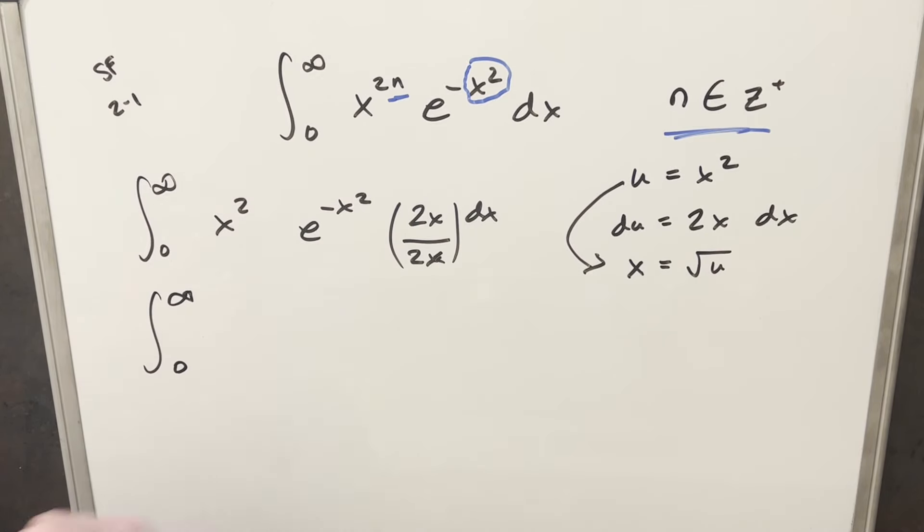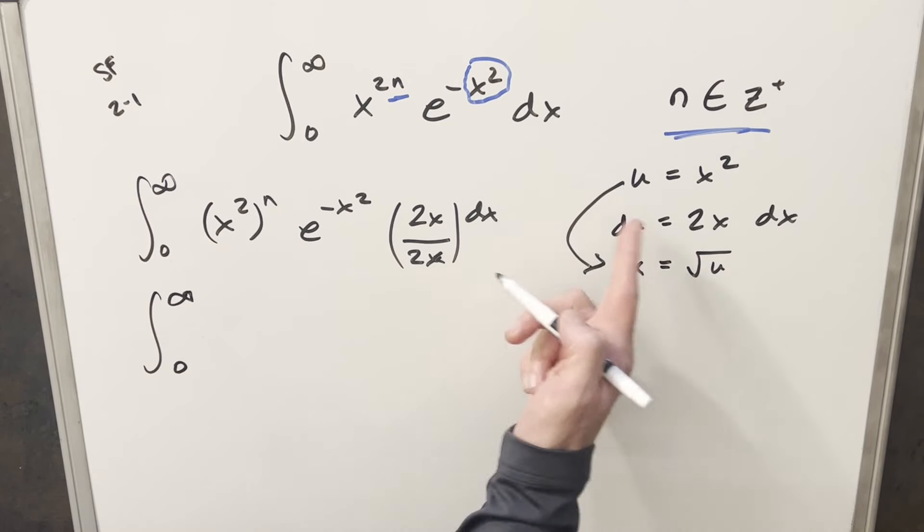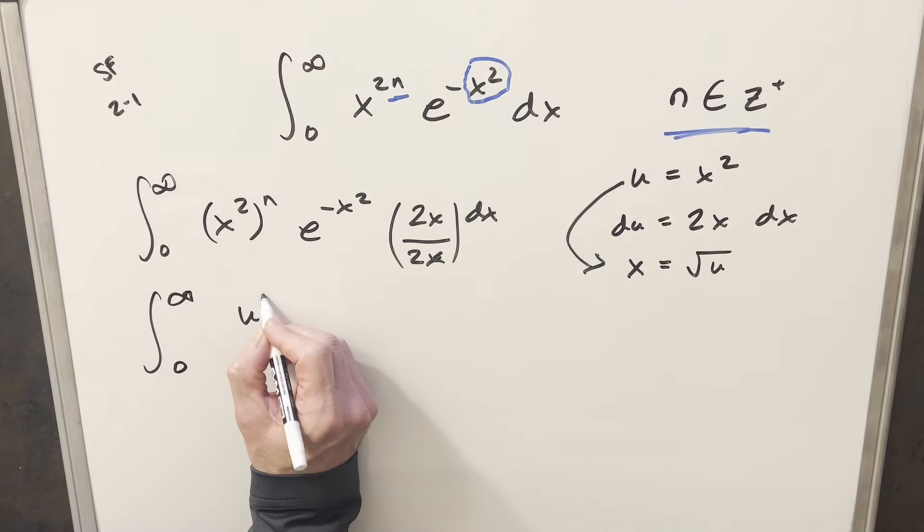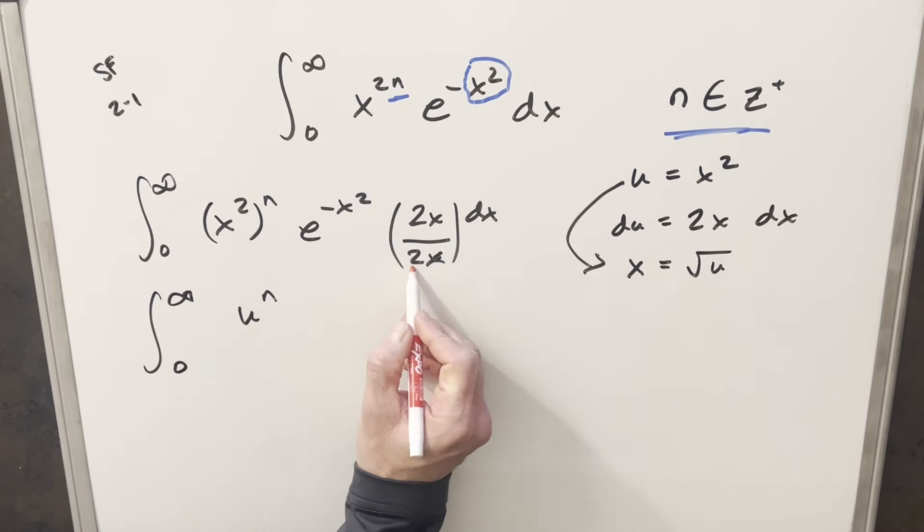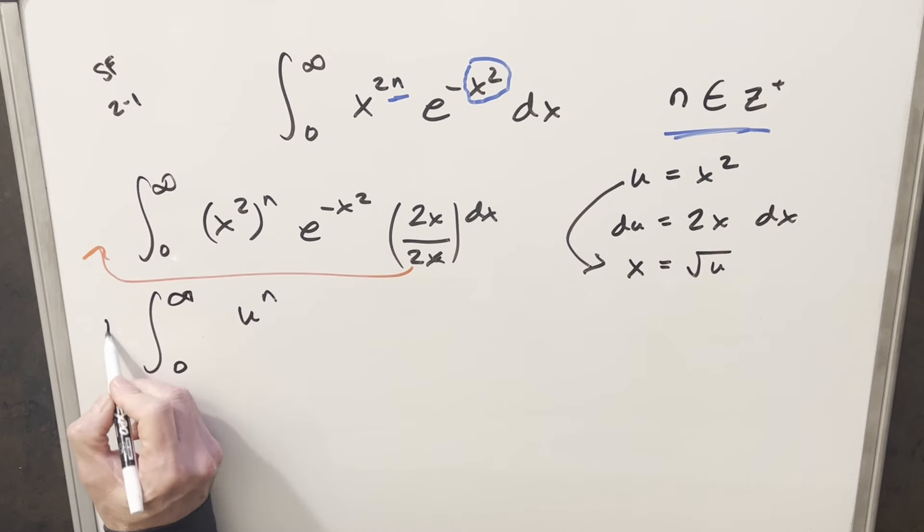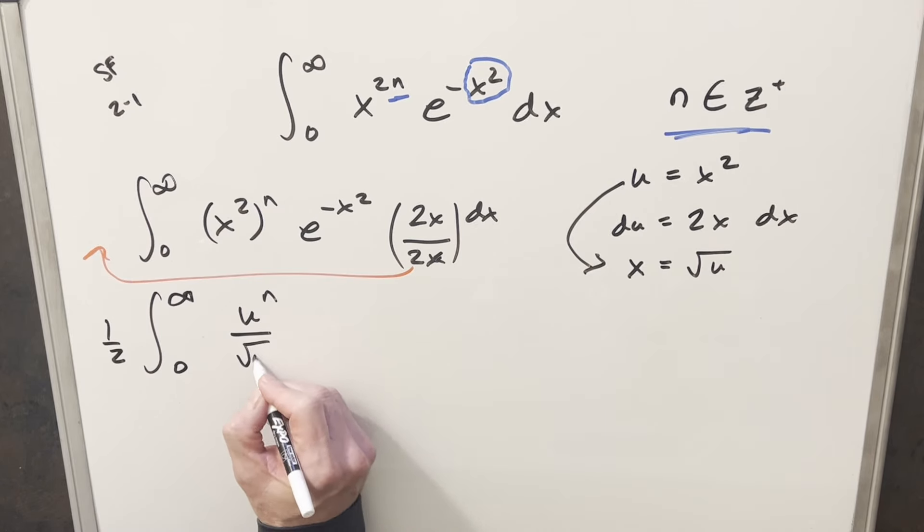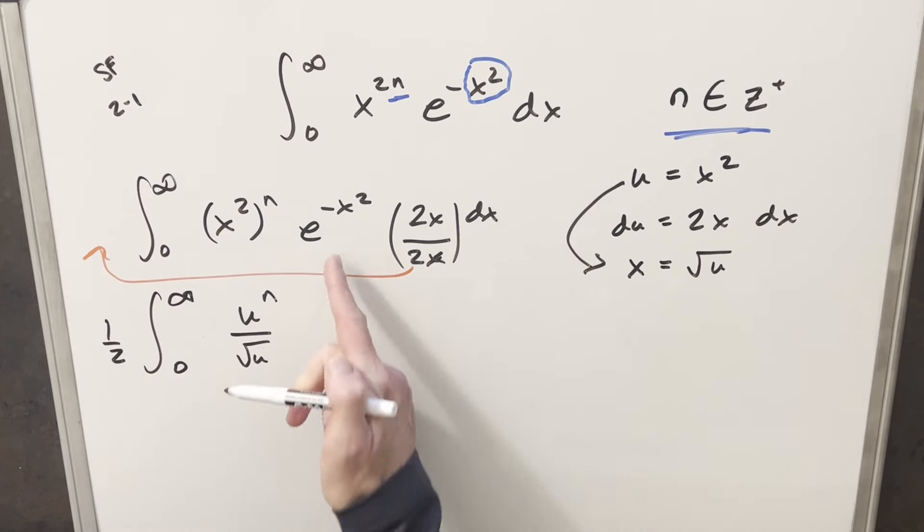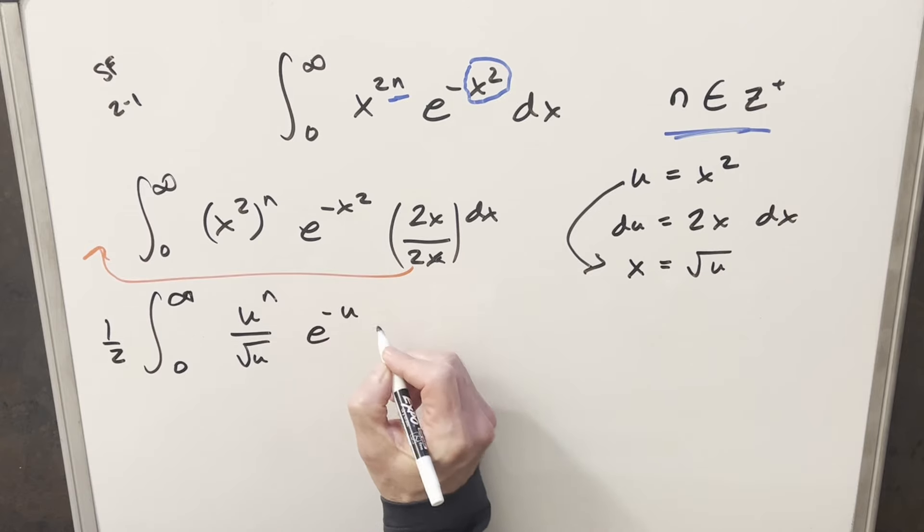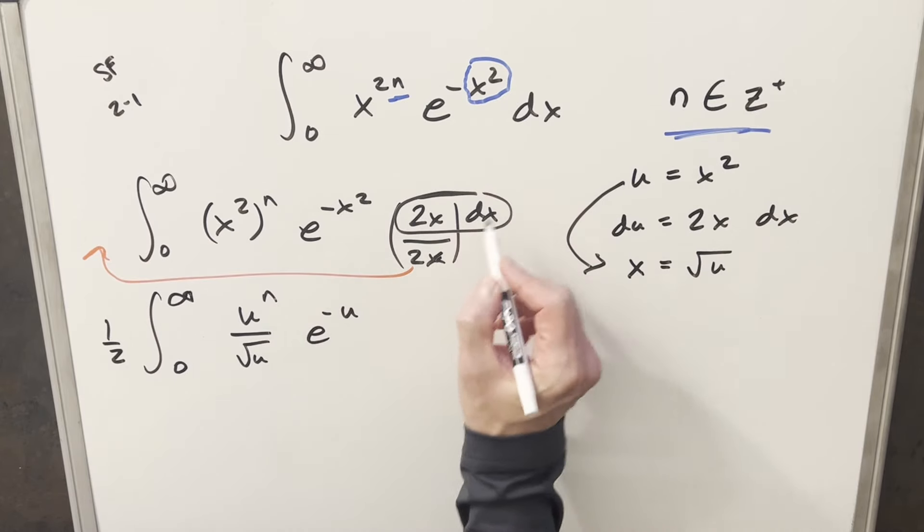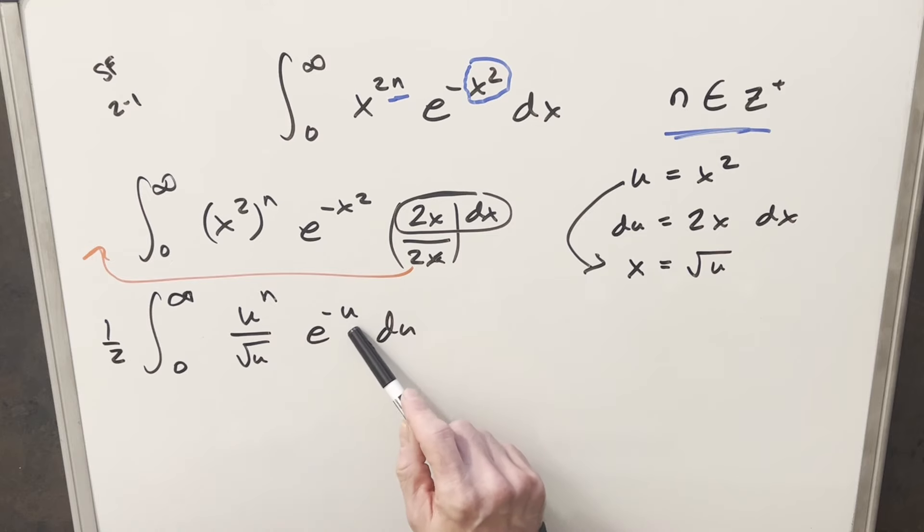And actually one thing I forgot, let's take this x to the 2n. I'm just going to rearrange it and write it as x squared to the n. Just to make the substitution clearer, because x squared is going to be u. So I can write this piece as u to the n. And then what I can do is take this 2 here and bring it up front as 1 half. So we'll have 1 half here. And then for this x, we solve for that being square root of u. So I'll write this square root of u right here. Then this is going to become e to the minus u. And then we have this piece right here is going to be our du.